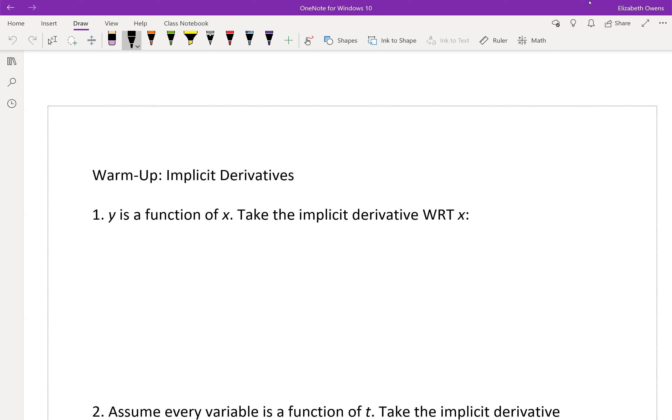So for our first warm up here, we're told that y is a function of x, as it usually is, and we're going to take the implicit derivative with respect to x of the following equation. The equation is x minus y squared equals 3.